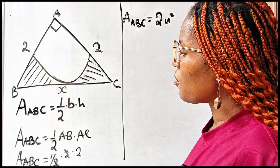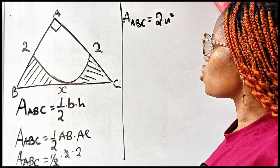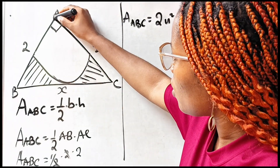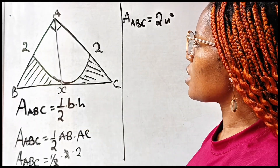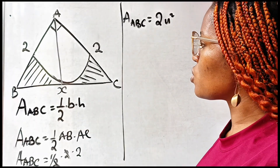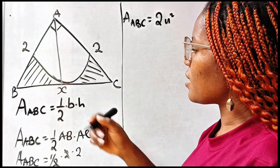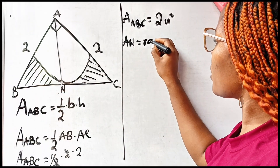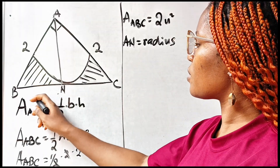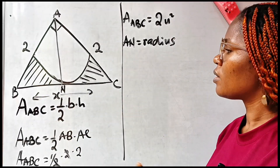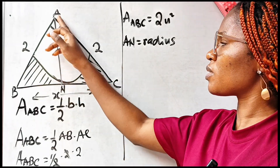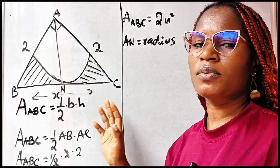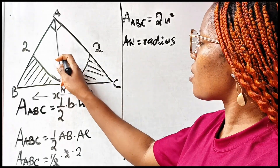Now if we drop a straight line from A to cut this triangle into 2, and we call this point, point N, then AN is equal to the radius of this circle. What we have inside there is a quarter circle, and AN is the radius of this quarter circle. The drawing is not drawn to scale. So we can call this R.